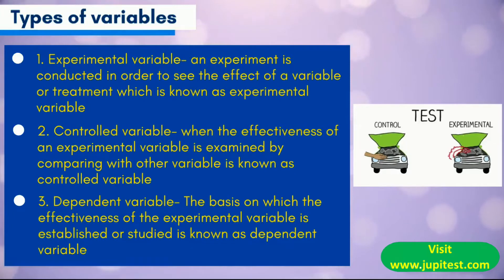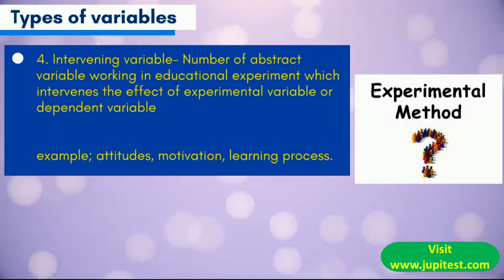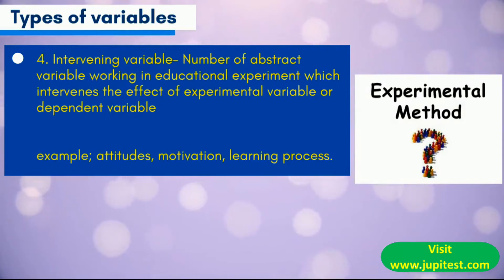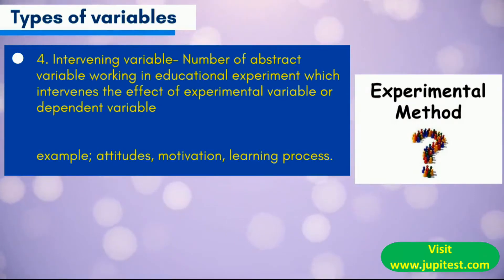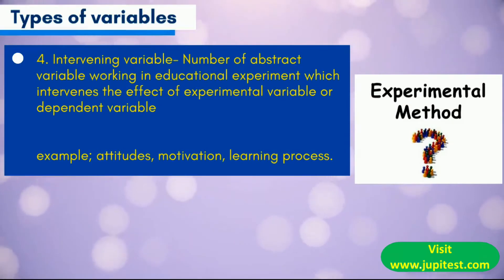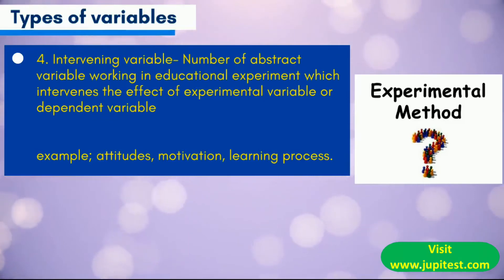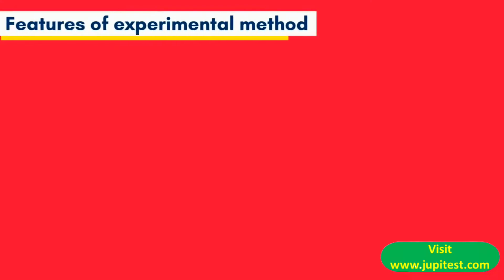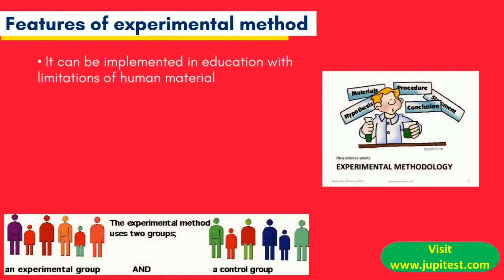Fourth, the intervening variable: a number of abstract variables working in an educational experiment that intervene in the effect of the experimental variable or dependent variable — for example, attitudes, motivation, and learning process. These are the features of the experimental method.